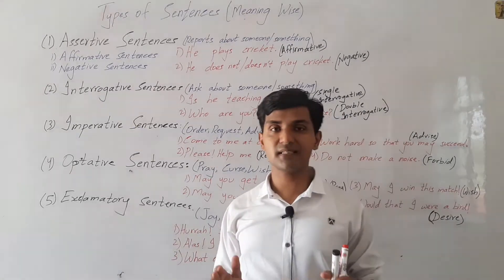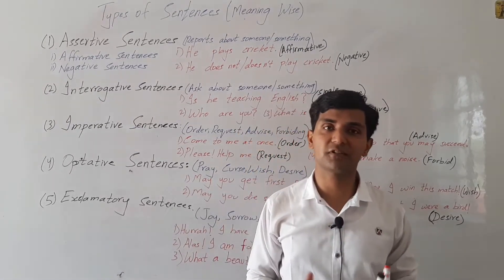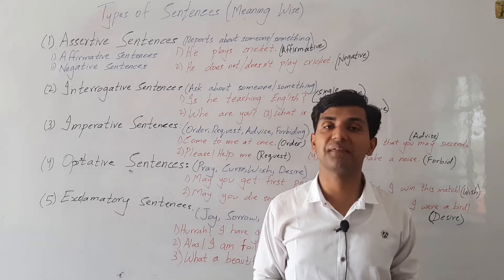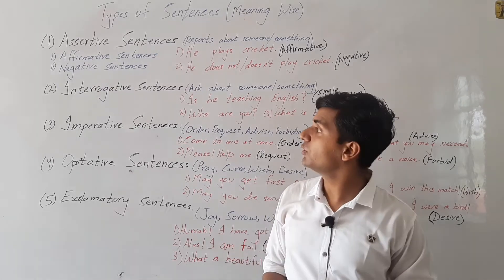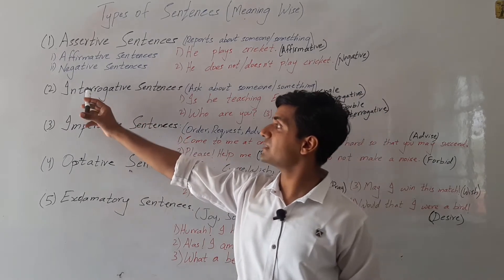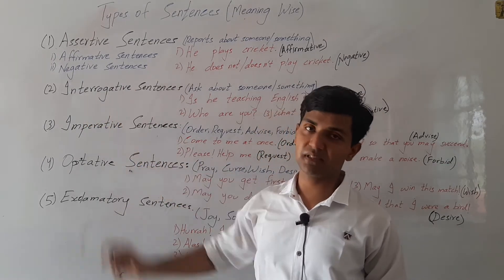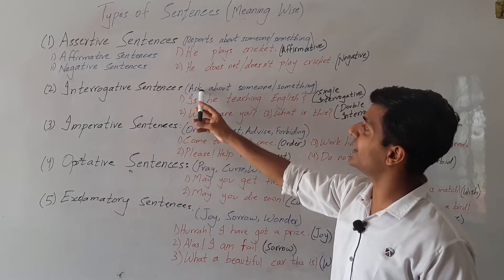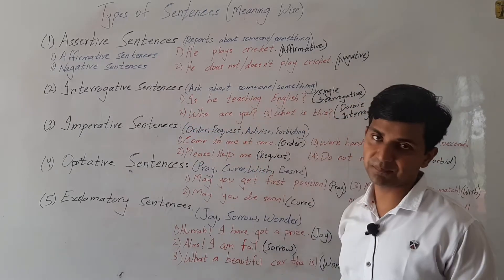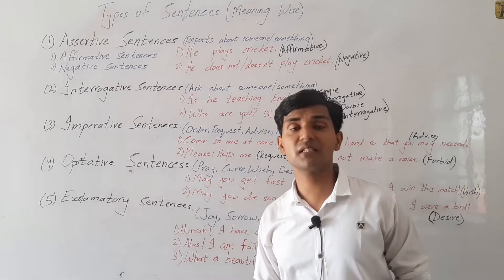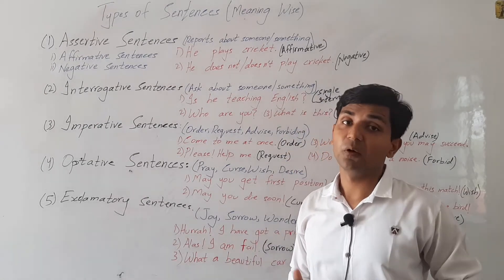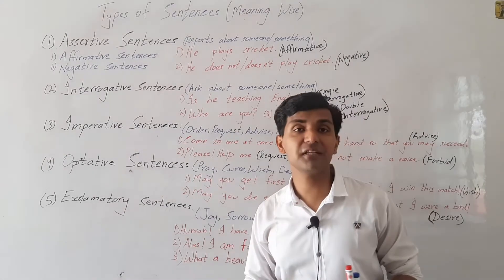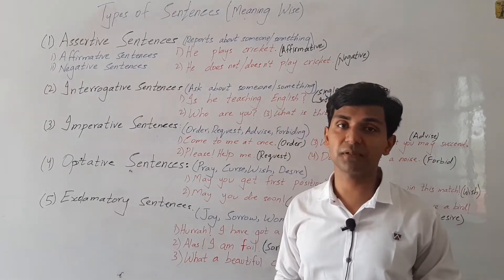So assertive sentences are the sentences that report about something, about some happening, about some activity, about the action of any person. Next, interrogative sentences are questions that ask about someone or something. In interrogative sentences we ask about something, about someone, about some person, about the activity or action of some person.